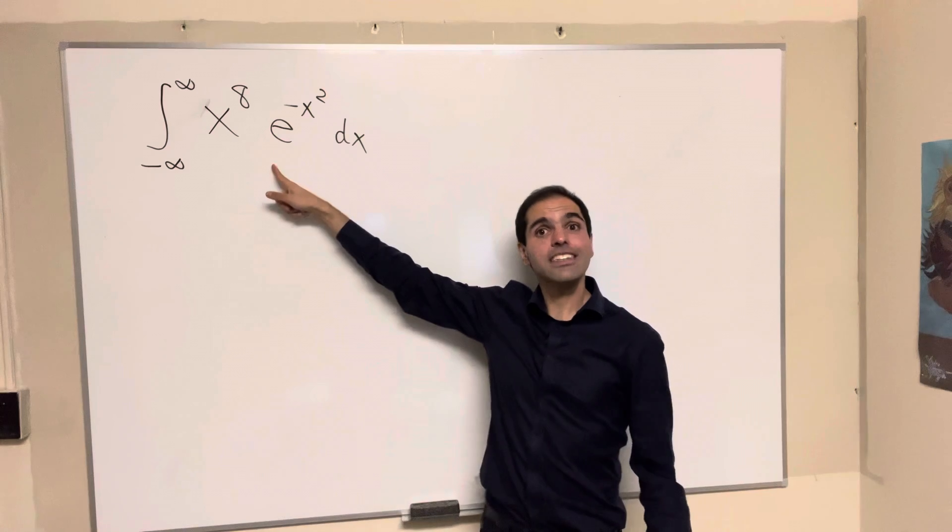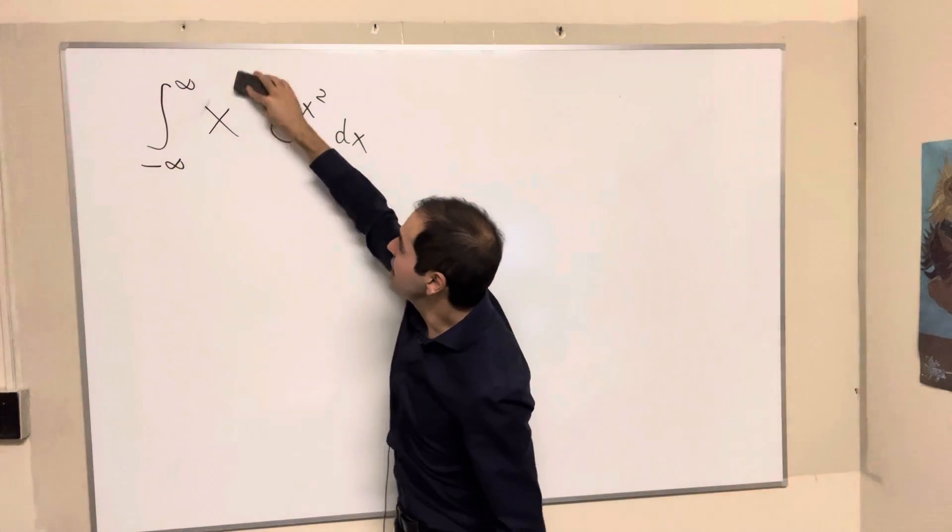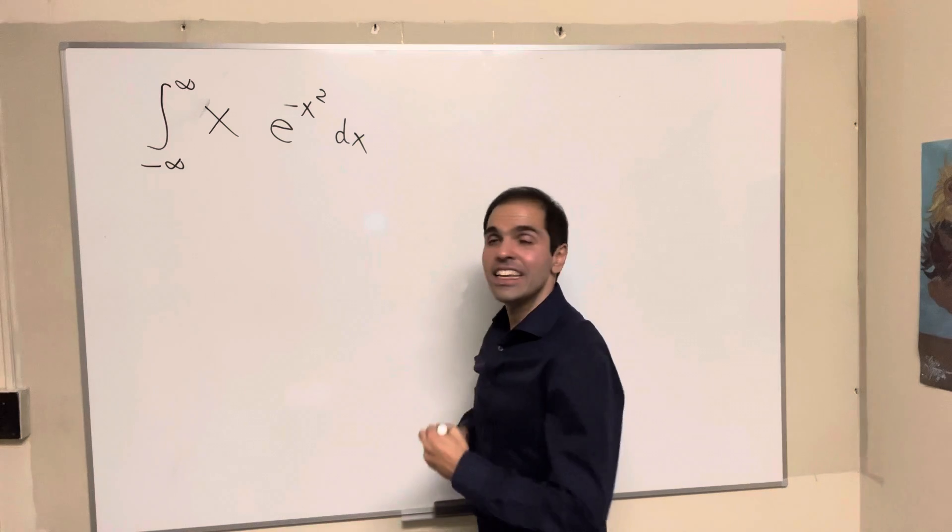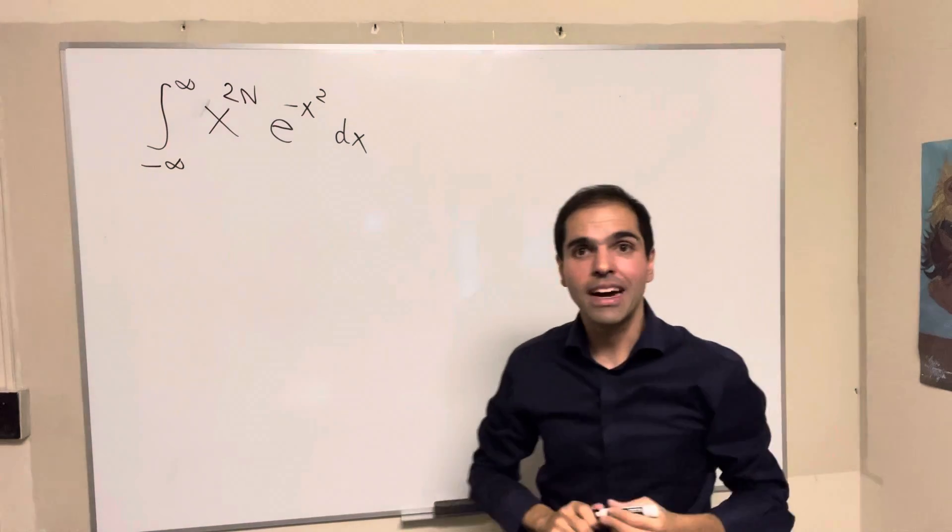And in fact, let's make this a bit spicier. Instead of calculating x to the eighth, let's calculate x to any even power, x to the 2n e of minus x squared.